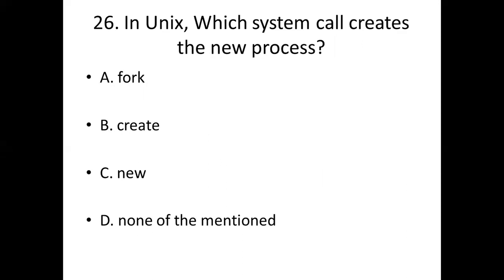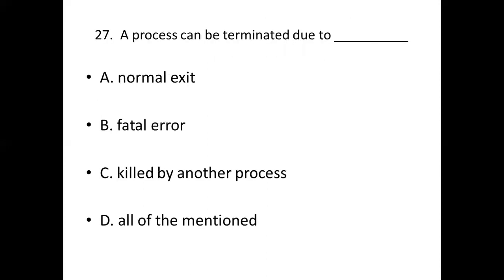Twenty-sixth bit: In Unix, which system call creates the new process? Option A: Fork. Option B: Create. Option C: New. Option D: None of them mentioned. Answer: Option A, Fork.